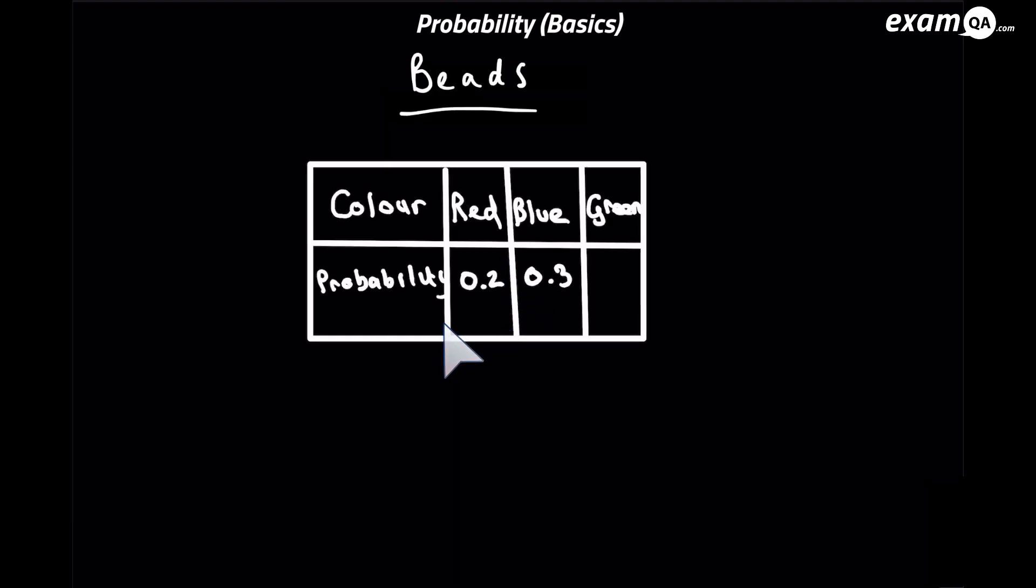Okay, so here we've got a table format. These are the probabilities of different coloured beads being picked out of a bag. Now we ought to work out the probability of picking a green bead. So we're going to use that rule again, that probabilities add up to 1.